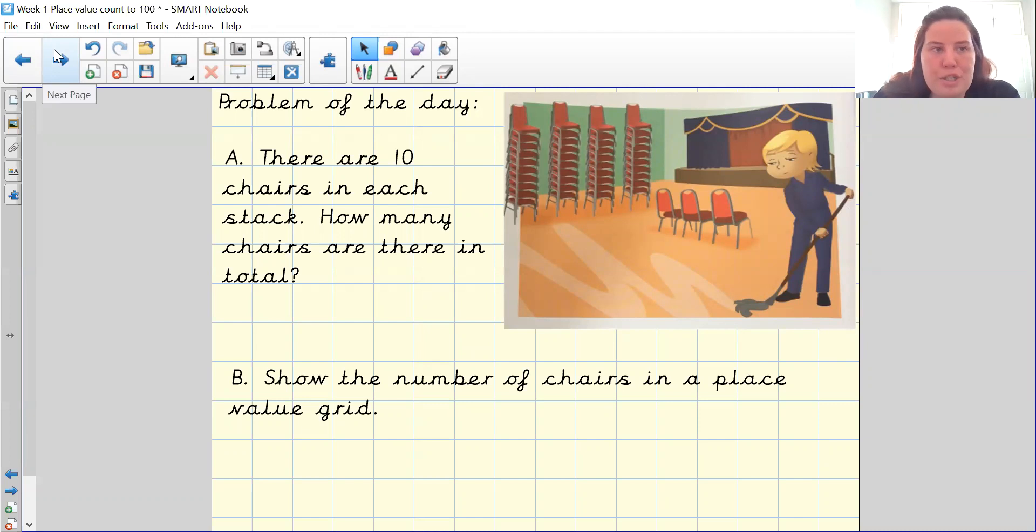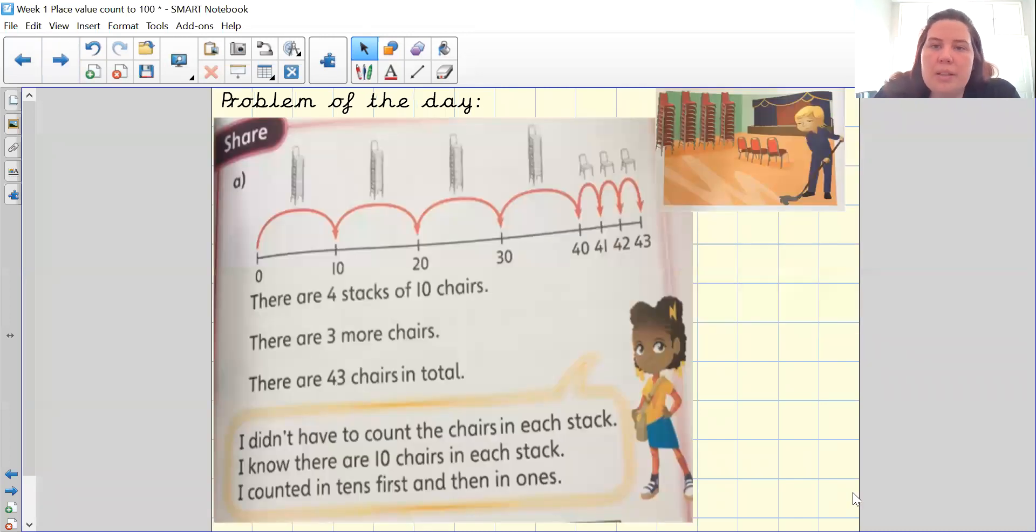I'm going to go through the answers on the next page. So if we have stacked them in groups of ten that means I can use a blank number line and I've jumped forward 10, 20, 30, 40 because I had four stacks, look one, two, three, four, and then I've jumped singly in my ones to represent my one, two, three, one, two, three which means I've got 43.